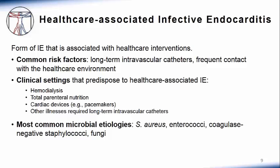Healthcare-associated infective endocarditis is a new form of infective endocarditis that has emerged in the setting of interventions increasingly being used to treat patients. These interventions usually involve a long-term intravascular catheter, procedures, and frequent contact with the healthcare environment. Healthcare-associated infective endocarditis can be seen in the setting of hemodialysis, total parenteral nutrition, cardiac devices such as pacemakers, or illnesses requiring a long-term intravascular catheter. It is often due to staphylococci such as staph aureus and coagulase-negative staph, since these microorganisms often colonize human skin and can be introduced into the bloodstream through intravascular catheters.